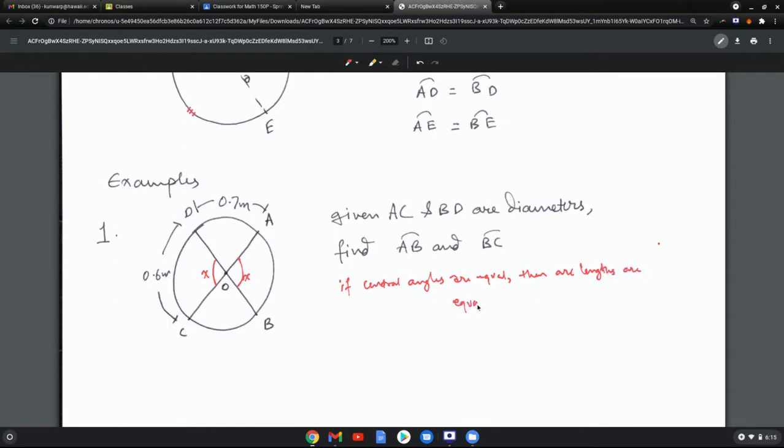So using that, what I get is: similarly, y equals y because of opposite angles. So arc AB should equal arc CD, which is 0.6 meters, and arc BC should equal the arc AD, which is 0.7 meters.